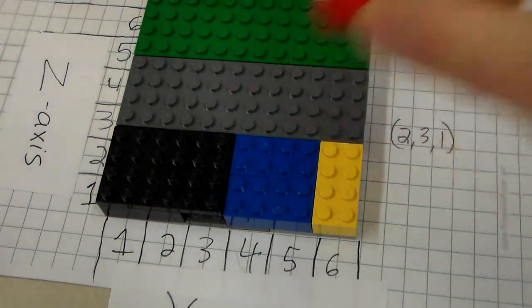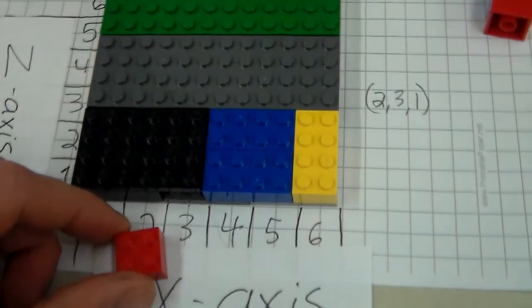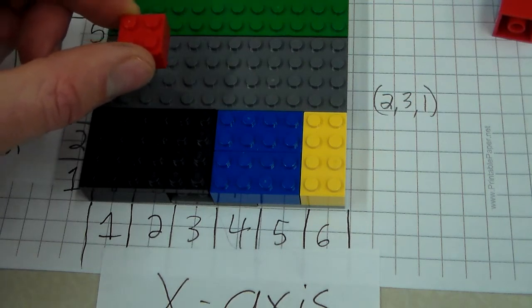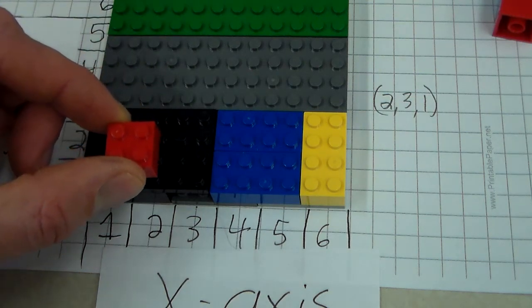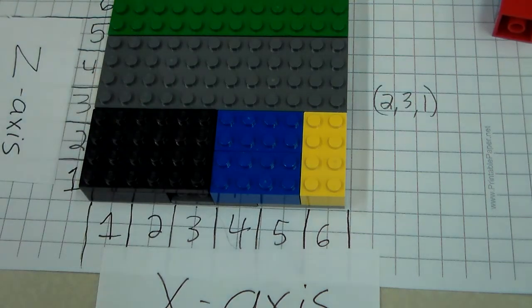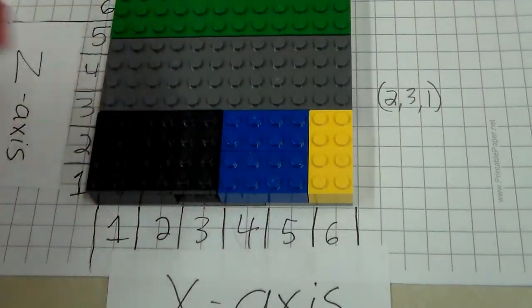I would take my Lego, I would go 2 in the x-direction, 3 in the y-direction, so that's up 3, and 1 in the z-direction. So it would be hovering right up here. Now I can't actually put that in without putting some things below it. In Minecraft, it would just be floating.